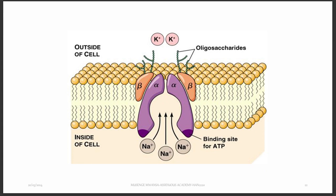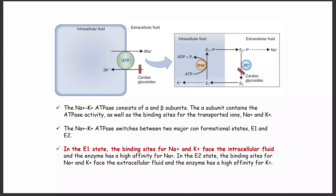The sodium-potassium ATPase transports sodium that is inside the cell and takes it outside, while taking potassium from outside and bringing it inside. Specifically, 3 sodium ions are pumped out and 2 potassium ions are pumped in. This requires ATP — you require energy. That is the sodium-potassium ATPase.